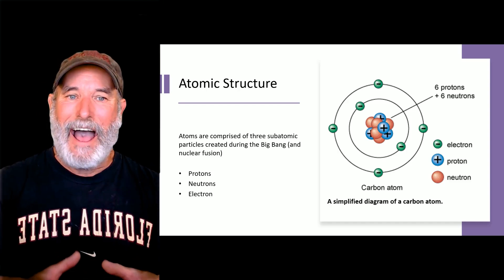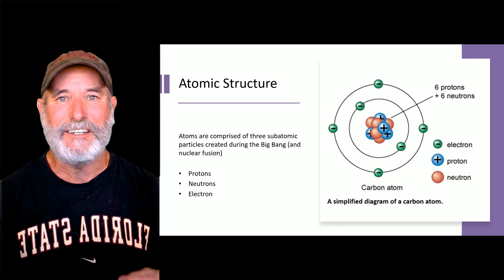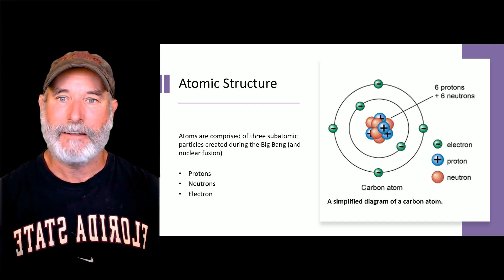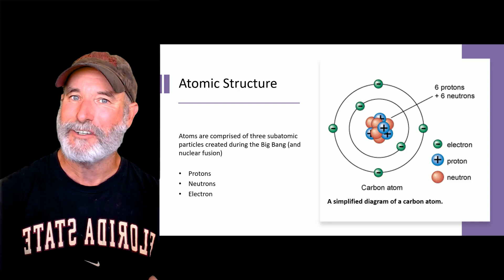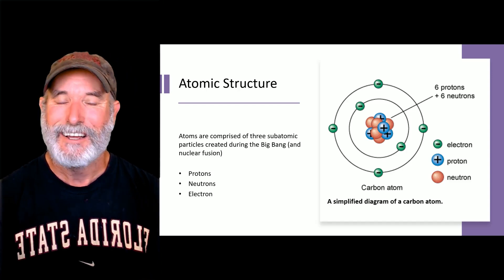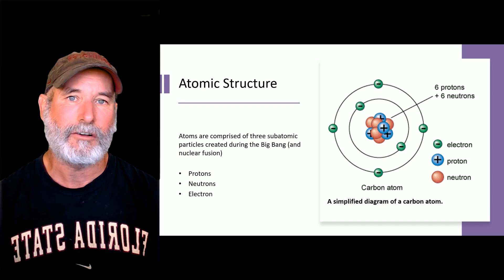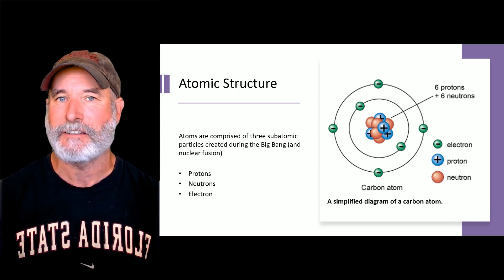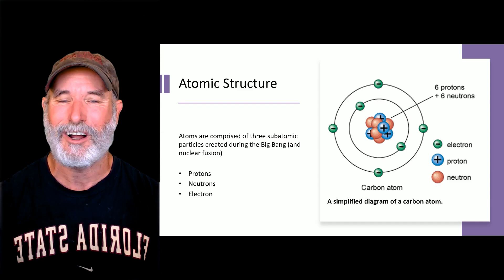Okay, so atoms are comprised of basically three subatomic particles. And for the most part, they were created during the Big Bang. But you can also get some of them, neutrons, during nuclear fusion inside the stars as well. The subatomic particles that we care about most as biologists, in terms of atomic structure, are the protons, neutrons, and electrons.